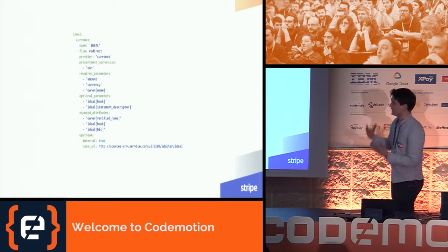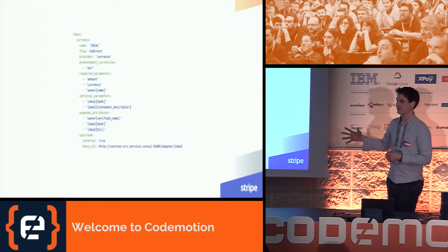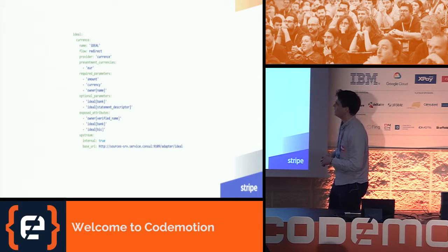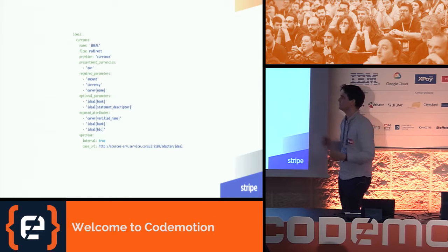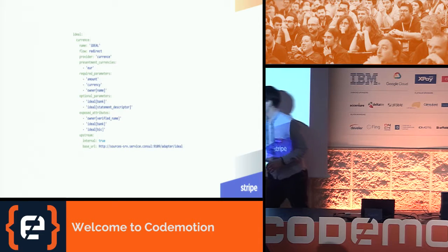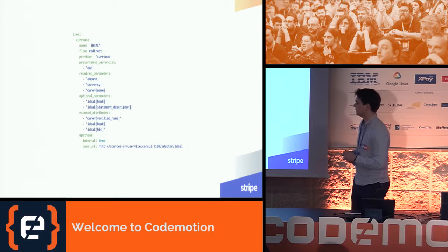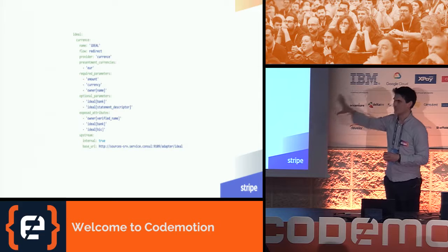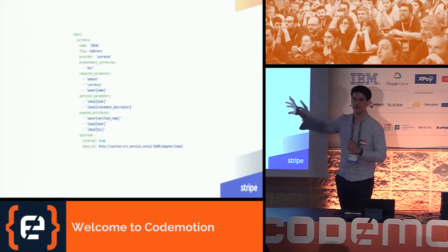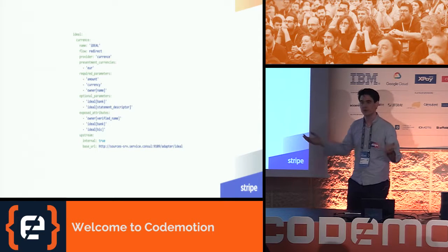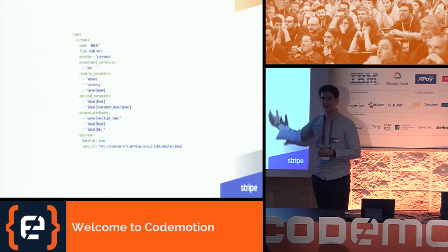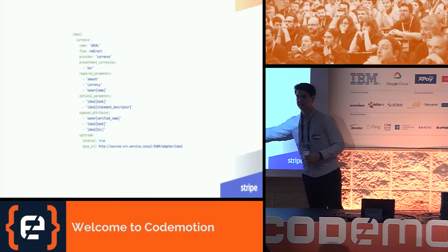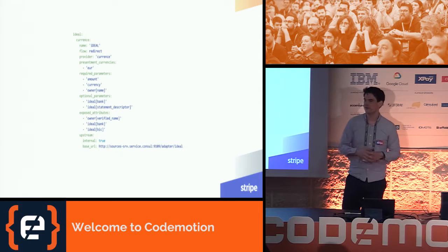This is the exact amount of code we have to write to add iDEAL into the Stripe API. We specify that it's an iDEAL payment method, it's a redirect flow, it has a provider called Currents, it specifies the supported currencies, all the expected parameters, and the URL of the service that implements the reverse API specification. That is really a win for us — this is all of the code change in our own API. If we only need to do that to add a new payment method from an API perspective, we believe our users will also have to add something not much bigger than that to support iDEAL if they already build on Stripe. There's no new endpoint that is payment-specific, and everything works inside our API.